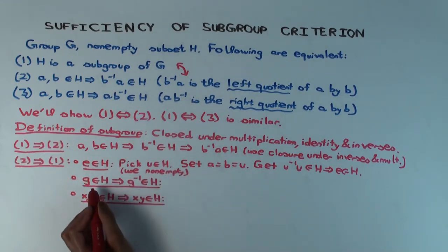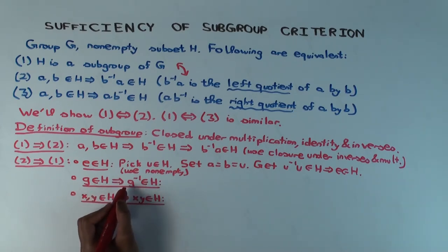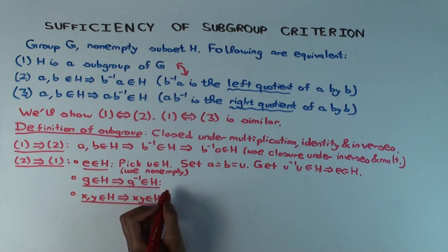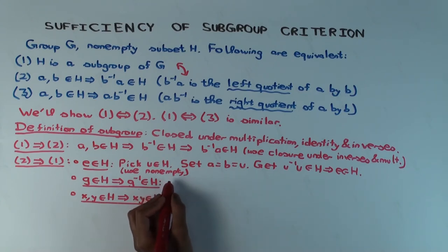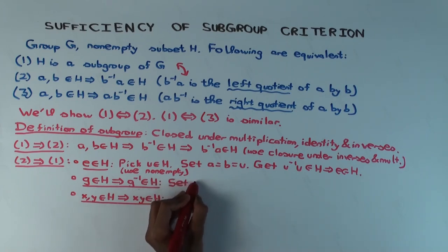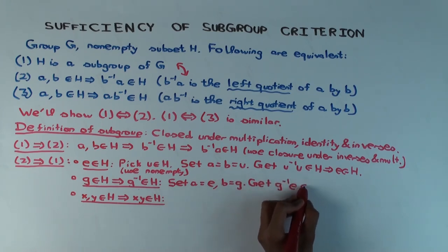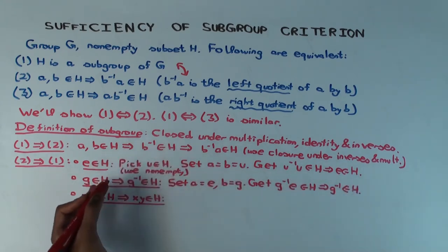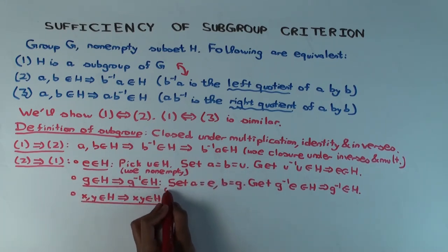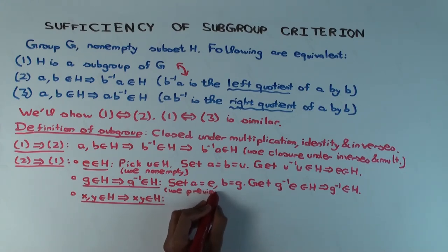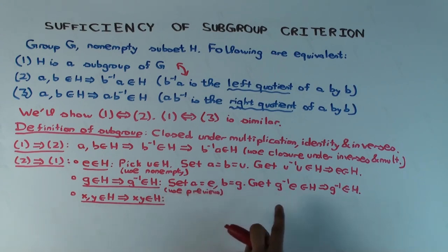Next: if g is in h, then g inverse is in h. We now have e in h, so set a equals e and b equals g. Then b inverse times a is g inverse times e, which equals g inverse, so g inverse is in h. It's important we did the previous step first, because here we are using that the identity element is already in h — we can only set a equal to e because we've already shown e is in h.